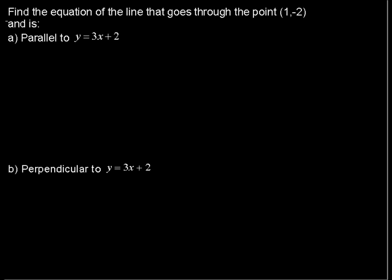Find the equation of the line that goes through the point (1, -2) and is first parallel to the line y equals 3x plus 2.